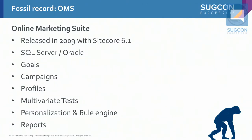Let's start with OMS. Online Marketing Suite was released in 2009 together with Sitecore 6.1. It supports SQL Server and Oracle, and it had many features that are still very relevant today. OMS had goals, campaigns, profiles, multivariate tests. It already had personalization and the rule engine, and it had some reports. When you think about nine years later, you still have all of these features as core features of the marketing platform. You can't do marketing without goals, campaigns, profiles, personalization. It was a really good product at that time, and it became even better during the last nine years.